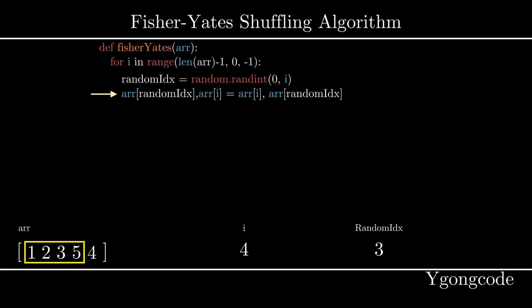In the second iteration, we will pick a random index between 0 and 3. Let's say we picked 1. Then we will swap the second element with the fourth element, which is the second to last element.